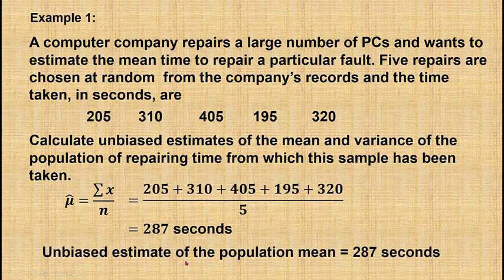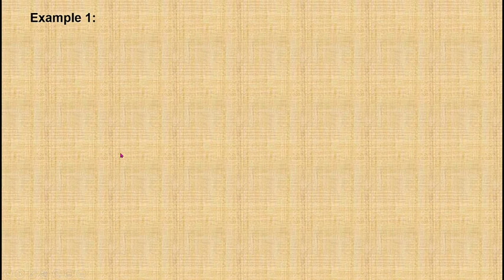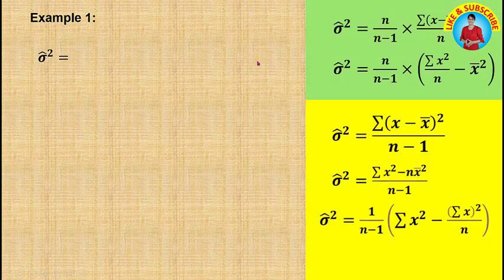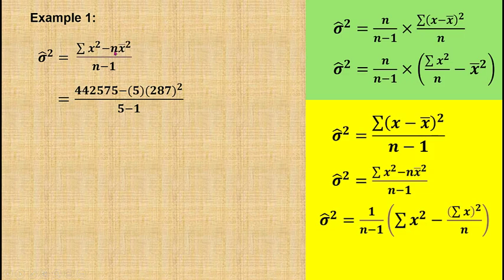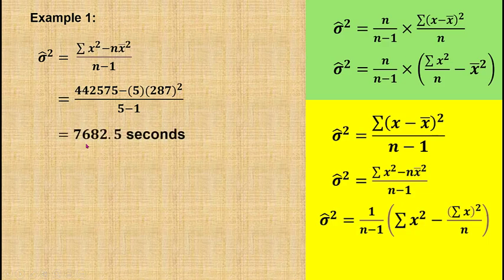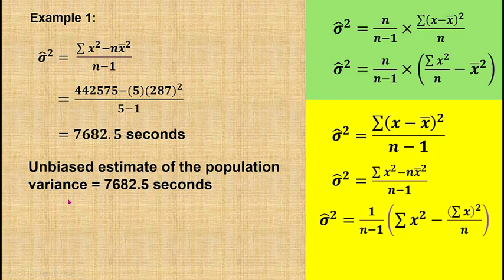Therefore, the unbiased estimate of the population mean is 287 seconds. Now I'm going to find the unbiased estimate of the variance, denoted sigma squared hat. Here I have many formulas available; let's use this formula. Sigma x squared, the sum of the squared observations, is equal to 442575; n is the sample size, which is 5; and bar x is 287. When we calculate, we find that it is 7682.5. Therefore, the unbiased estimate of the population variance is 7682.5 seconds squared.